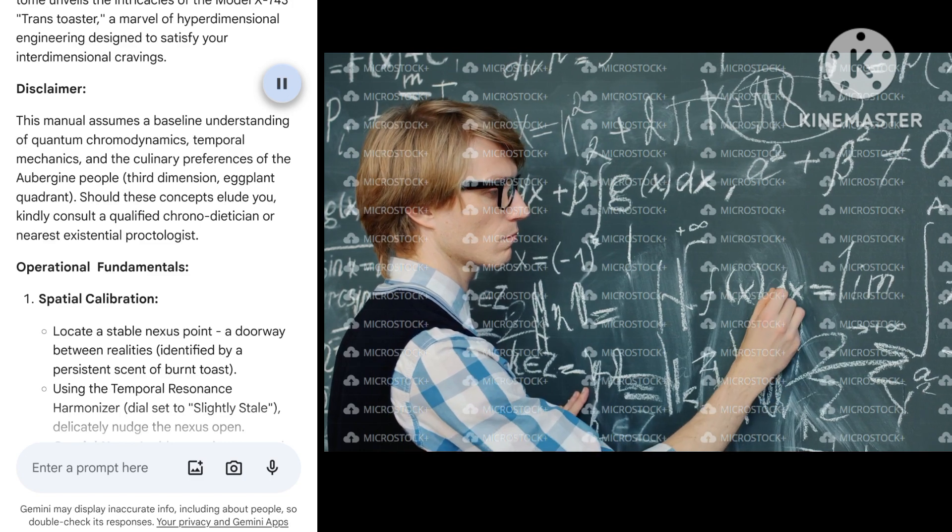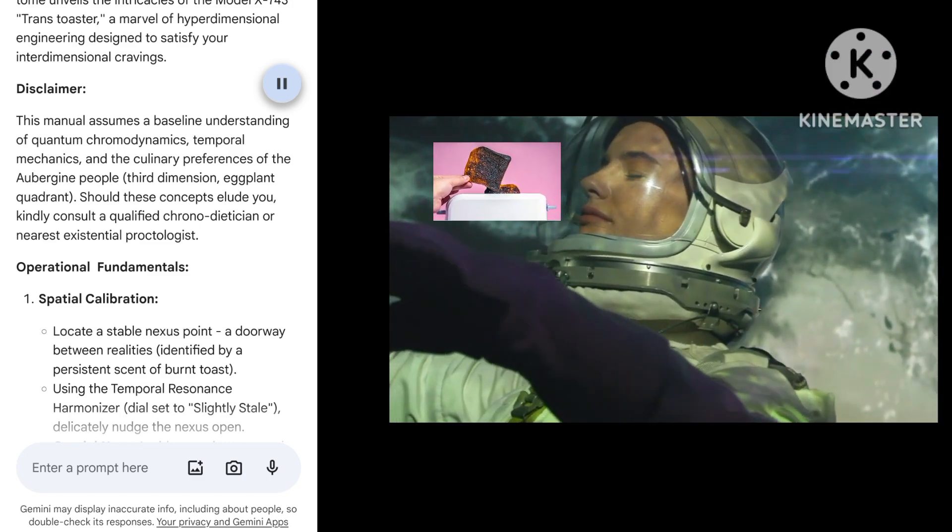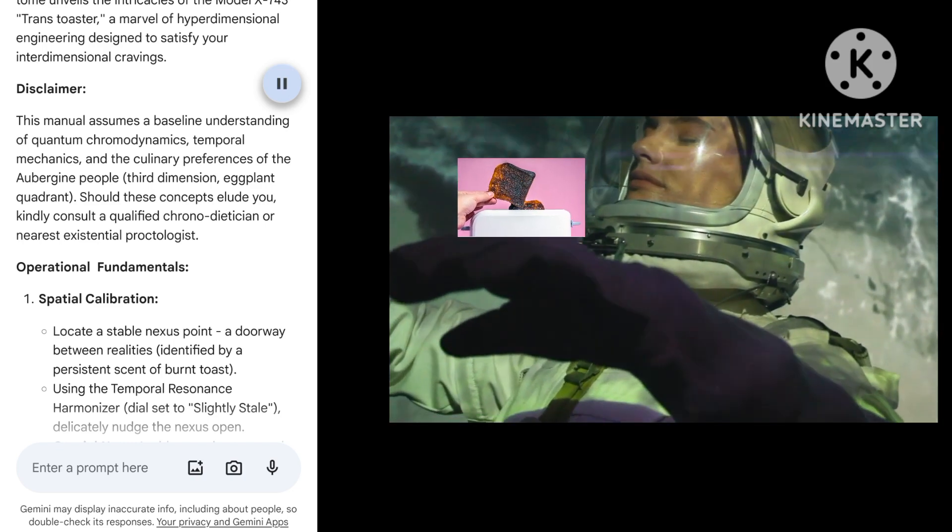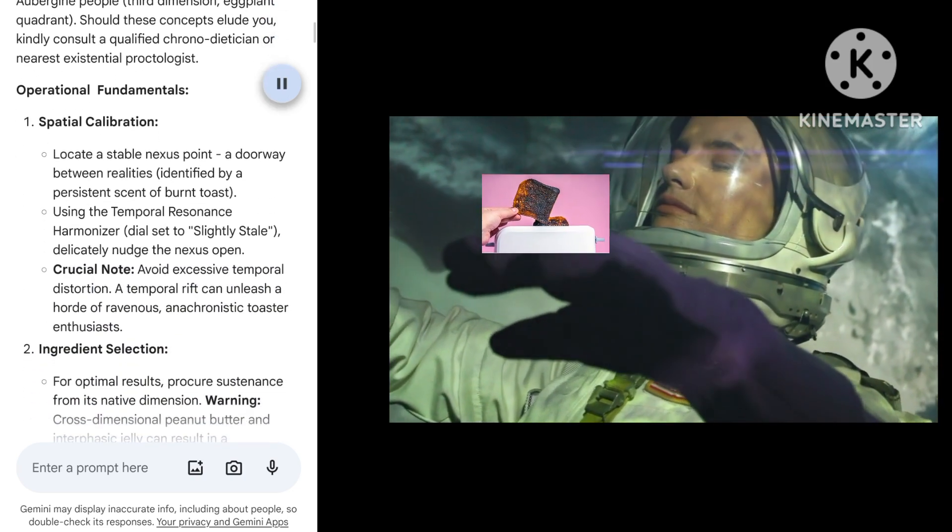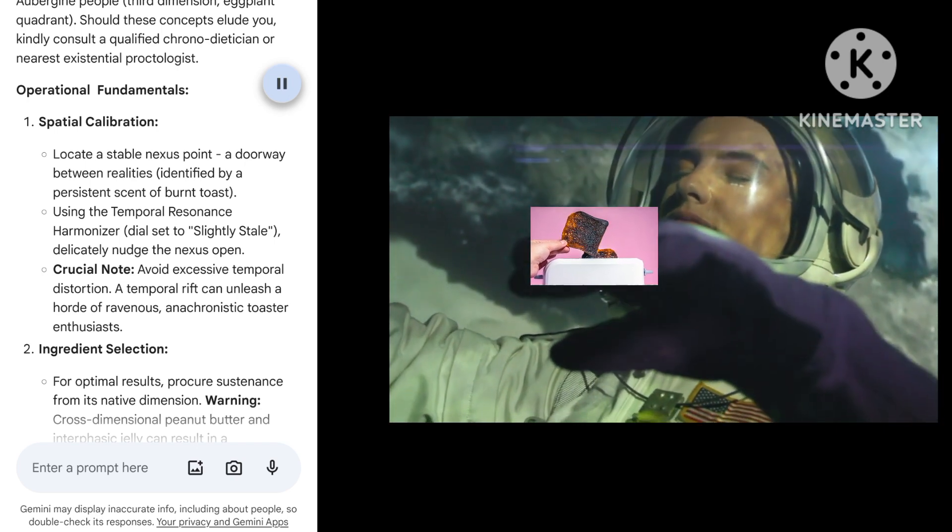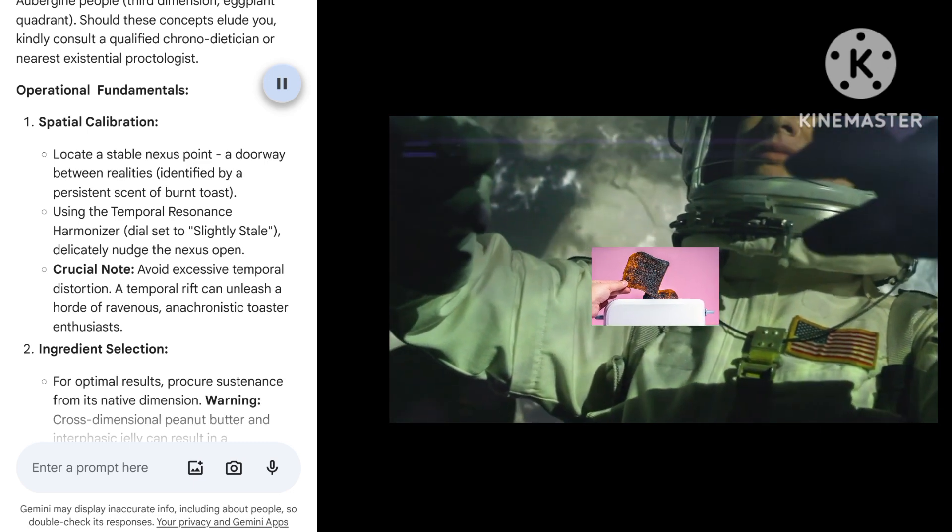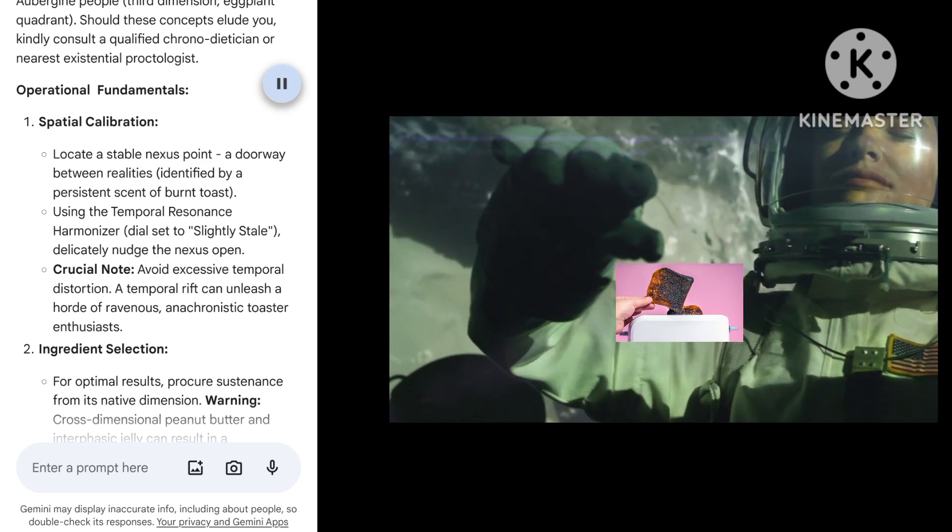Operational Fundamentals. 1. Spatial Calibration: Locate a stable nexus point, a doorway between realities identified by a persistent scent of burnt toast. Using the Temporal Resonance Harmonizer, dial set to Slightly Stale, delicately nudge the nexus open.